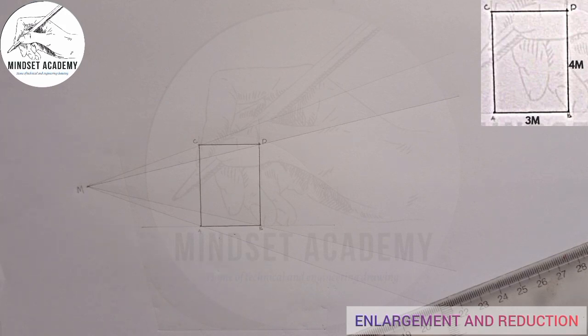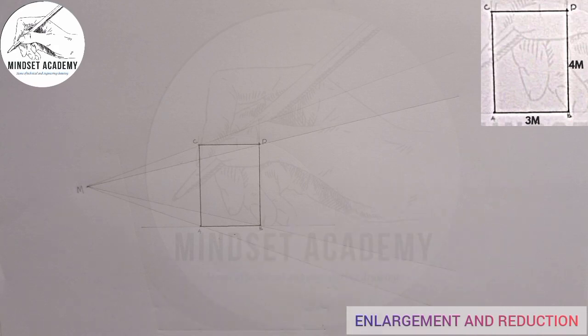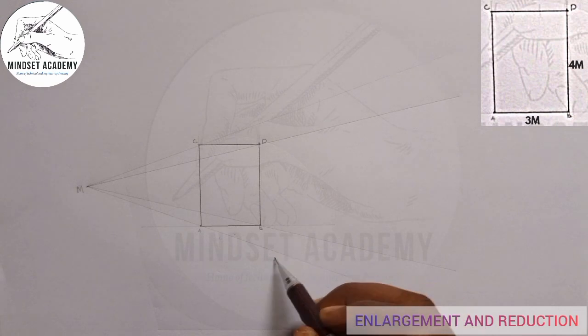So I want to enlarge it. If I'm enlarging it, what would I do? I'll just pick any point along this line. I'm picking this point. This should be my new point A.